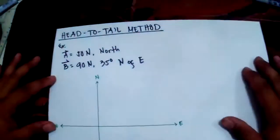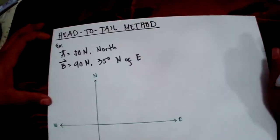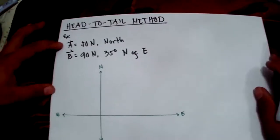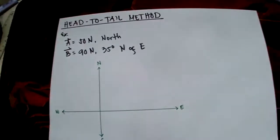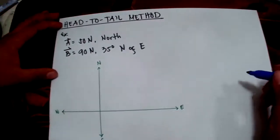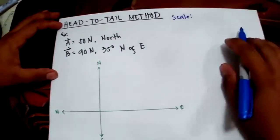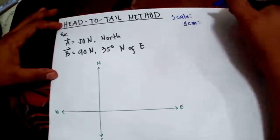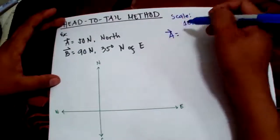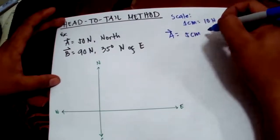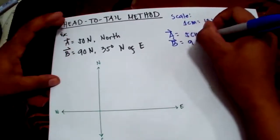For the head-to-tail method we have an example here. We have vector A which is 50 newtons going north, and vector B which is 90 newtons at 35 degrees north of east. To graph this one we will be using a scale — 1 centimeter is equivalent to 10 newtons. So vector A is 5 centimeters and vector B is 9 centimeters.